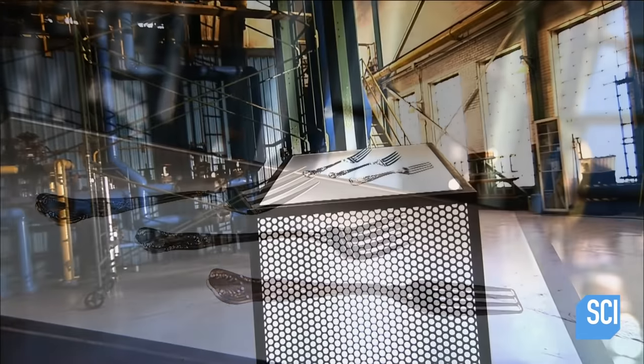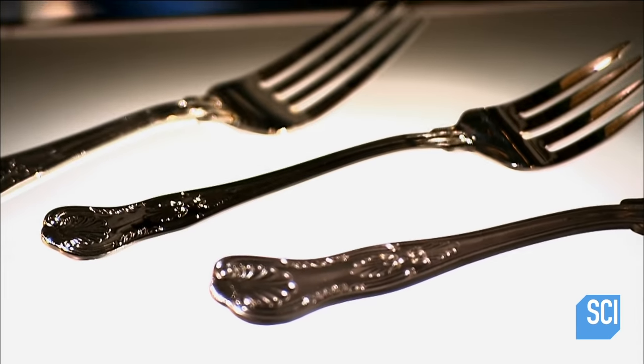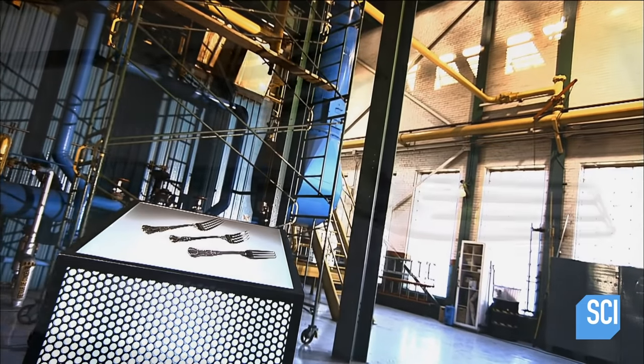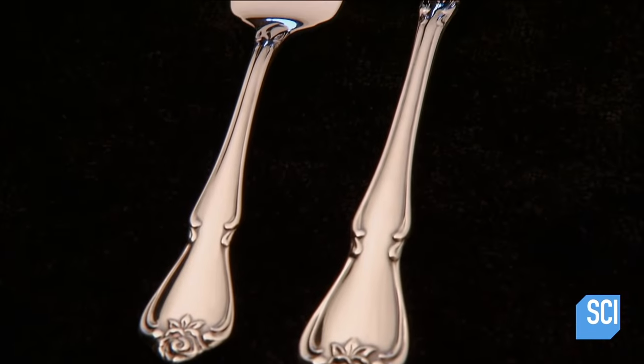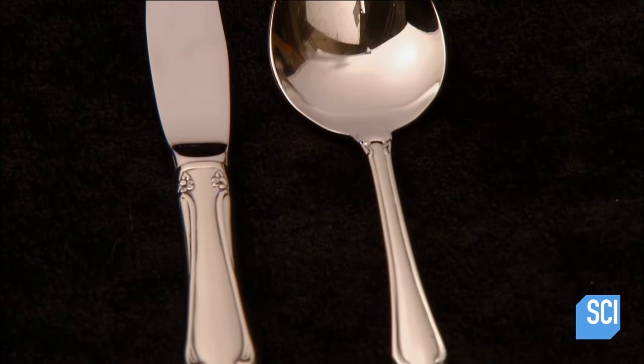Humans have been making eating utensils since prehistoric times. Sterling silver flatware remained the norm for centuries, but since the 1950s, stainless steel flatware has been the metal of choice. Stainless steel flatware is preferred by many because it's durable and doesn't tarnish over time.